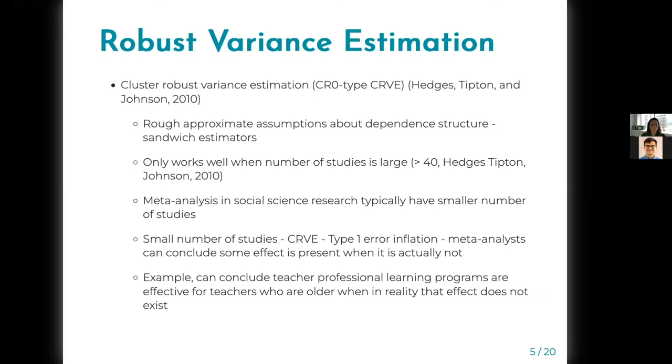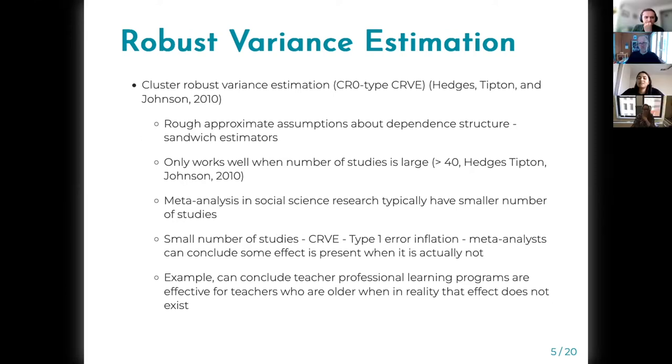In social science research, Tipton 2015 and Tipton and Pusyevsky 2015 have noted that over half of the studies generally have less than 40 studies.